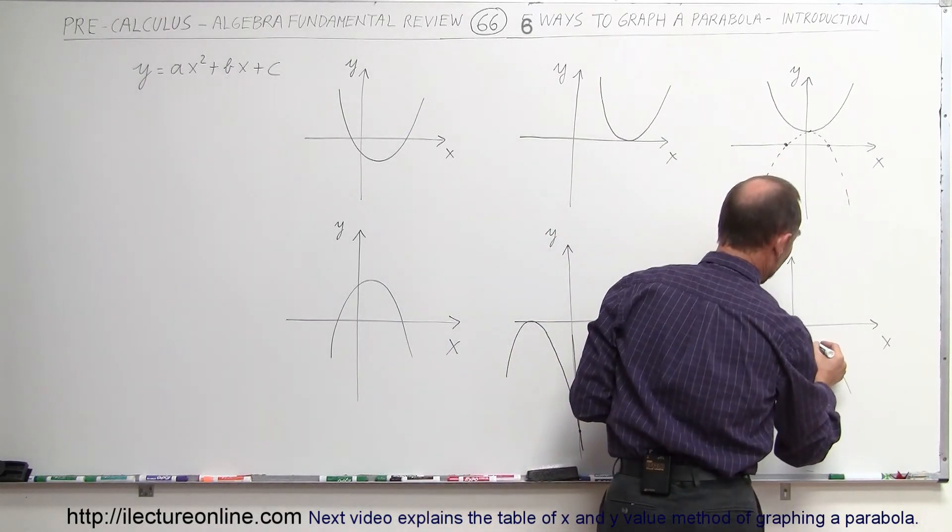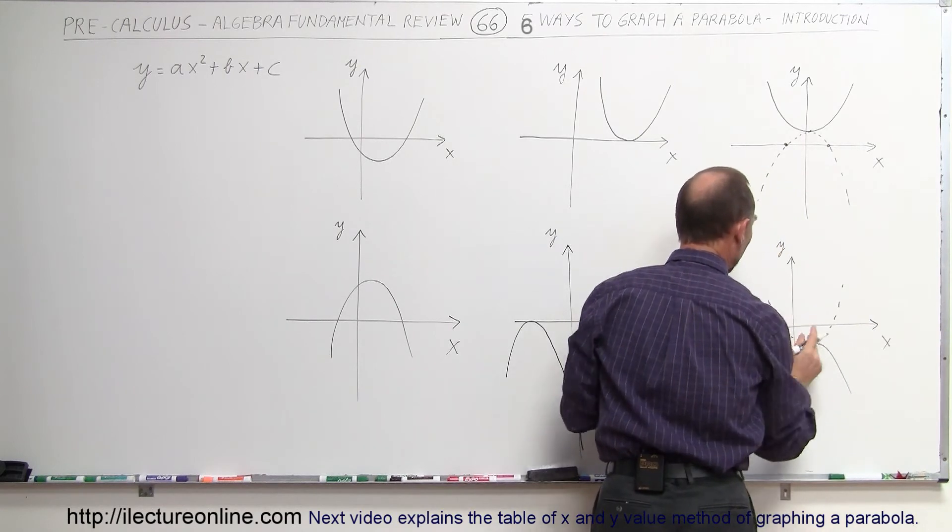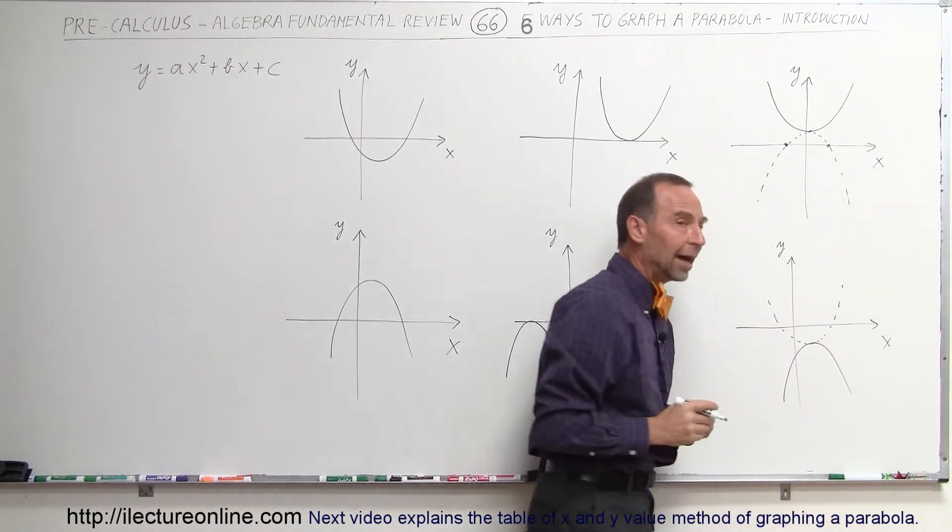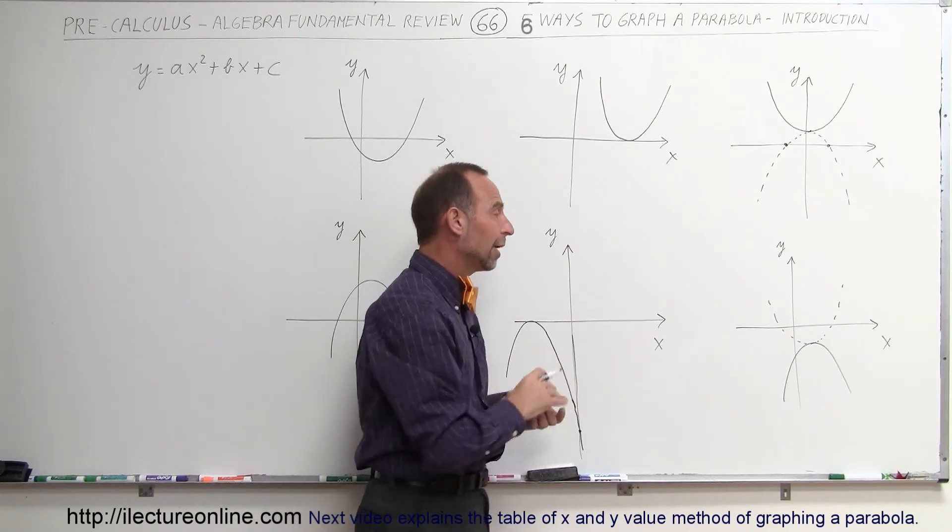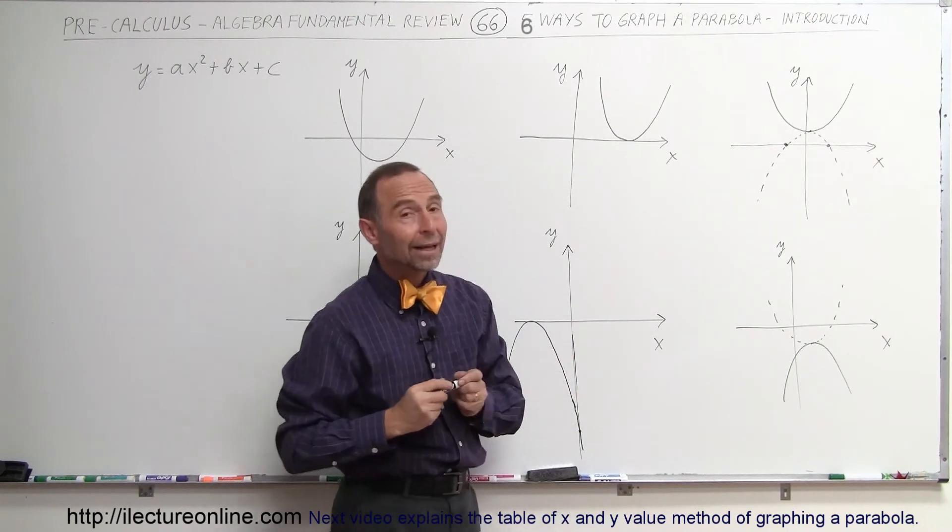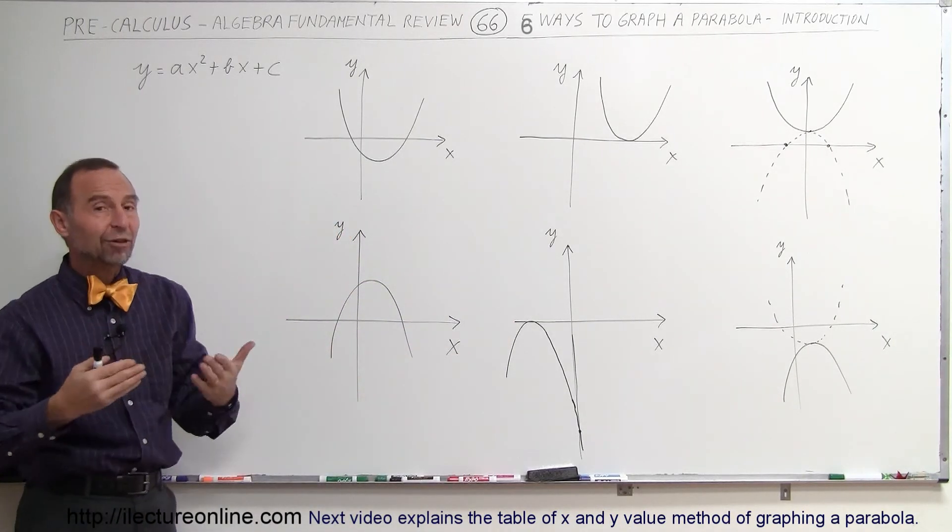And here again, if we draw a mirror image from the vertex upward like this, you can see that where the dashed line crosses the x-axis, those would be the imaginary solutions of that particular parabola. So that's the context in which we're going to use to find ways of graphing parabolas.